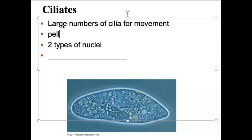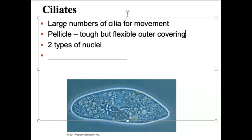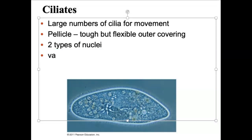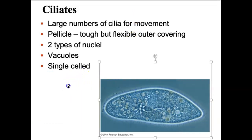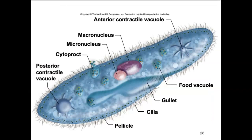How quickly you can go if all those oars are sweeping and beating simultaneously — very rapid movement. They do have the pellicle, that tough but flexible outer covering, similar to the euglenid. These guys are classified under alveolata because of the alveoli. There are going to be two types of nuclei within the ciliates: a large nuclei and a small nuclei. And ciliates have bunches and bunches of vacuoles within their body. They're all single-celled organisms, but when we look internally, pretty complex — lots of different structural adaptations and features that have made them successful.